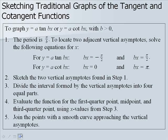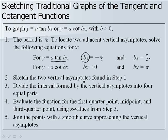To sketch graphs of tangent and cotangent: first, find the period using π over b — note this is π/b, not 2π/b, and applies only to tangent and cotangent. Second, locate vertical asymptotes by solving equations for x: for tangent, set bx equal to negative π/2 and π/2; for cotangent, set bx equal to 0 and π. Third, sketch the asymptotes. Fourth, divide the interval into 4 equal parts, then evaluate the function at the first quarter point, midpoint, and third quarter point. Fifth, join the points with a smooth curve approaching the asymptotes.